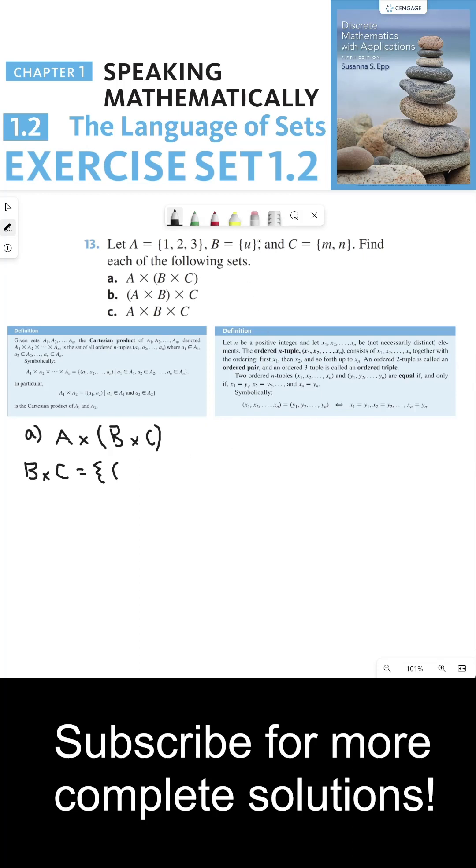So what is my set B? My set B is my set containing just an element U. So U is the only possible element I can put for the first element in this ordered pair. For my second element, it has to be from my set C, which contains two elements, M and N. So I would have one ordered pair where it's U, M, and then another ordered pair, U, N. So this is the set of all ordered pairs where the first elements are in the set B, and the second elements are in the set C.